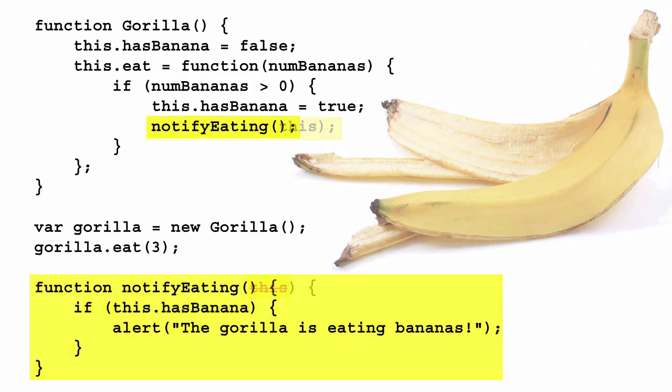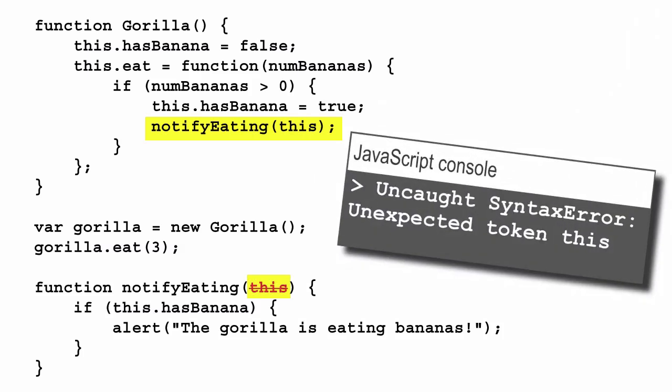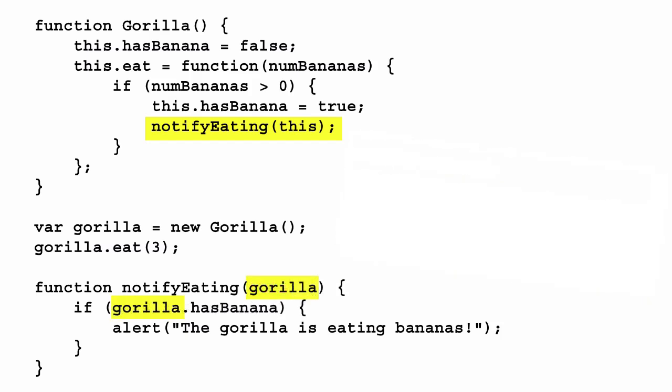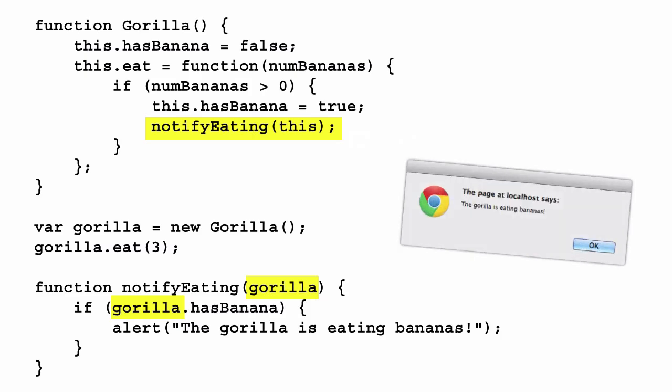To fix this problem, we can pass the value of `this` to the `notifyEating` function. But we can't name the parameter `this` because `this` is a special variable — you can't use it as a variable name or a parameter name yourself. If you try to do this, you'll get a syntax error. So instead, we'll name the parameter something else, in this case `gorilla`. And this solution works perfectly. We pass the gorilla object into the `notifyEating` function and then use that object to test to see if gorilla has a banana. And it does, so we see the alert.